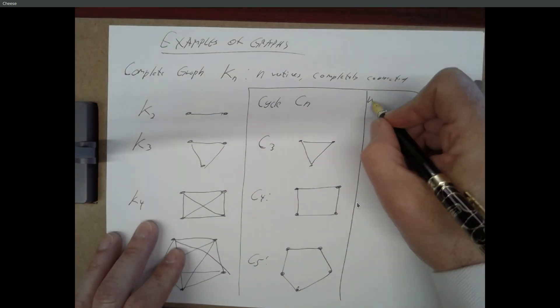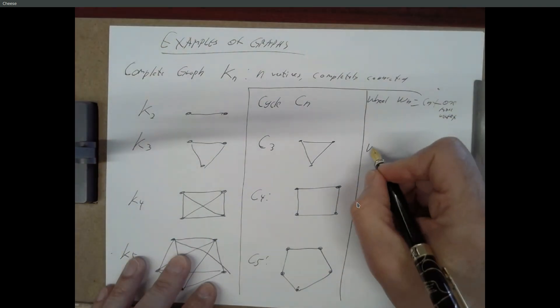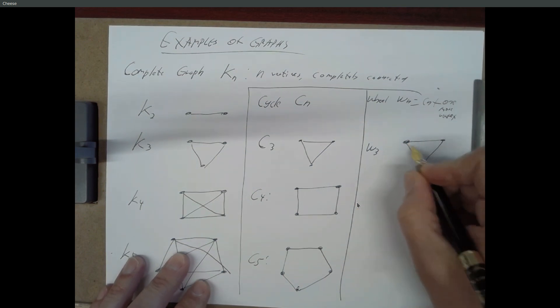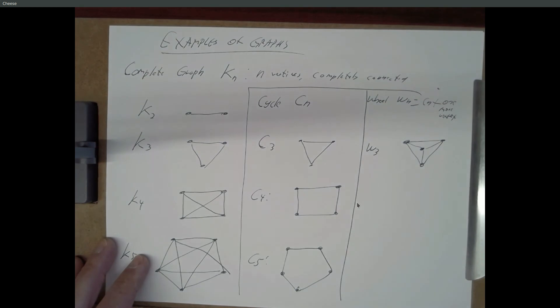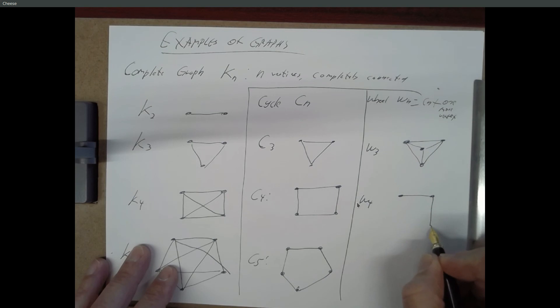And a wheel. WN equals CN plus one more vertex. So, W3 looks like cycle 3. But we add one more vertex in the middle and we connect that to everything. And W4 is C4 with one more vertex in the middle connected to everything. And so on.